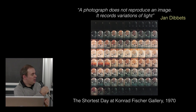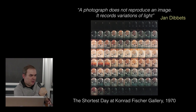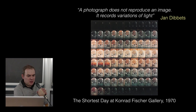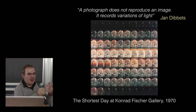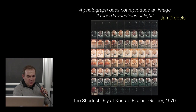There are other artists who study light and photography. One important conceptual photographer is Jan Dibbets from the Netherlands. This is a series of photographs he made in 1970. What Dibbets says is: a photograph does not reproduce an image, it records variations of light. This is very inspiring for me — it says that a photograph is not about the subject, but just variations of light. It's up to us to recognize a subject.